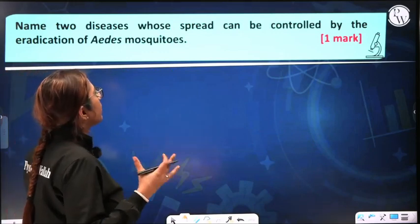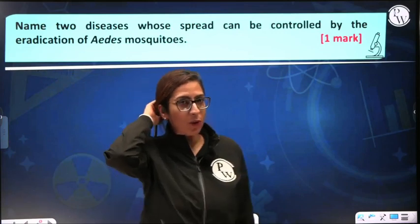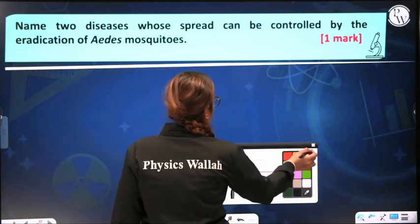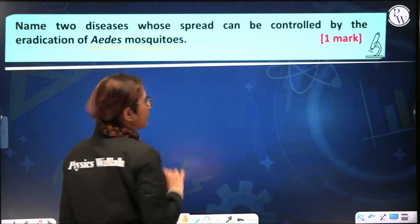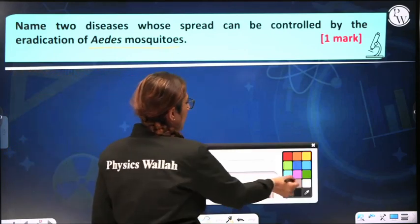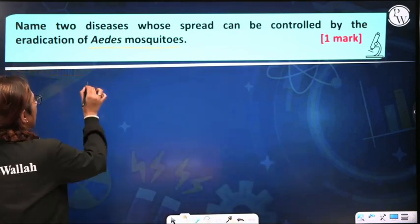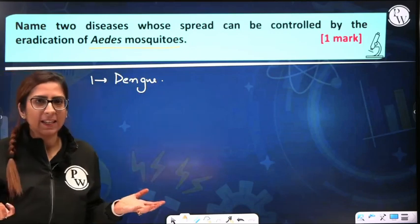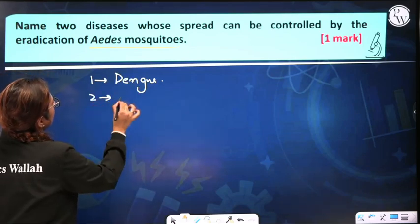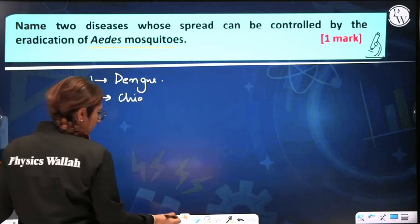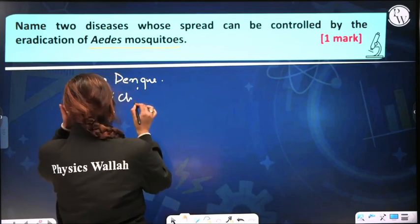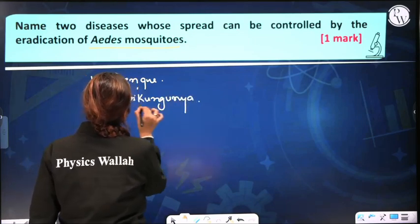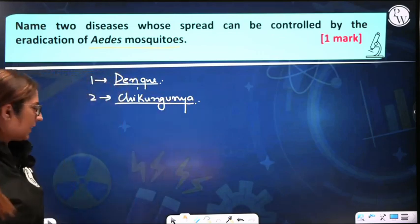Name the diseases whose spread can be controlled by eradication of the Aedes mosquito. Hope my students know the correct answer. The first one is dengue — everyone definitely knows about that. The second one is chikungunya. Let's move on to the next question.